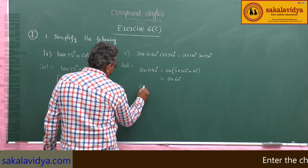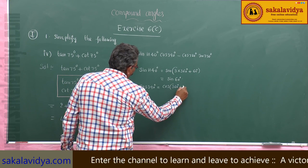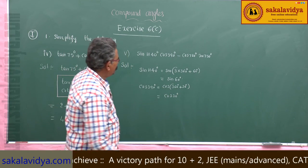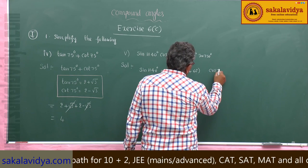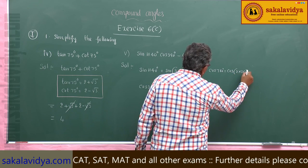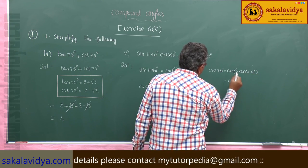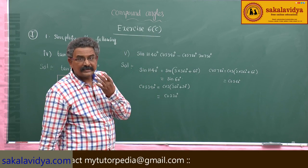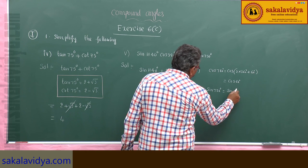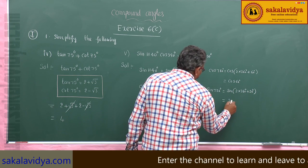Now cos 390 can be written as cos(360 + 30), which equals cos 30 degrees. Cos 780 can be written as cos(2 × 360 + 60), which equals cos 60 degrees. And sin 750 degrees equals sin(2 × 360 + 30), so this is sin 30 degrees.